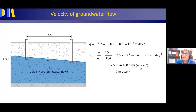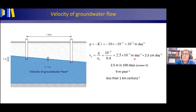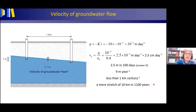2.5 m in 100 days is about 9 m per year — less than a kilometer per century. The time for a conservative pollutant to travel from the left to the right piezometer screen (1000 m) at 2.5 × 10⁻² m/day is 40,000 days, or more than 109 years. Thus, groundwater — with exceptions such as karst areas or when pumped — flows very slowly. This also explains why the kinetic energy term was negligible in Bernoulli's law for groundwater: velocity-related energy is insignificant.